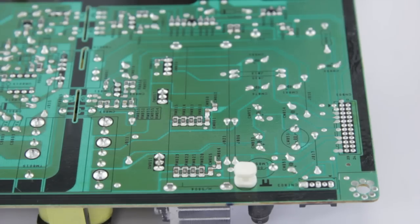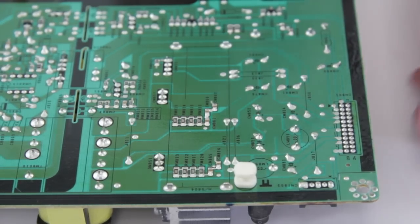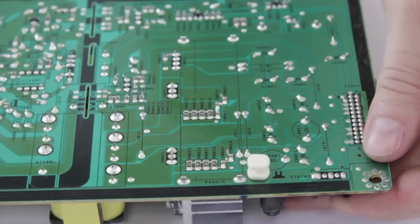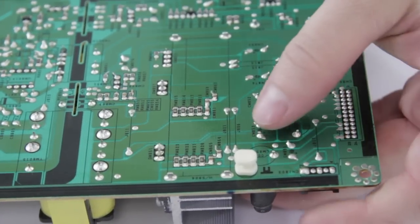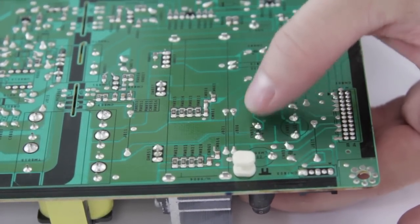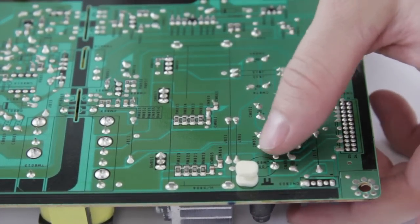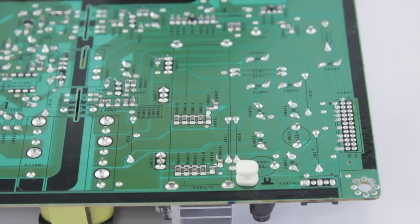So we've gone ahead and flipped the board over, and if you're having trouble trying to find the cap that you want to replace, sometimes if you just put your finger on the other side you can kind of pinch it and it shows you exactly the location. Otherwise it can be a little hard to locate them on the back.